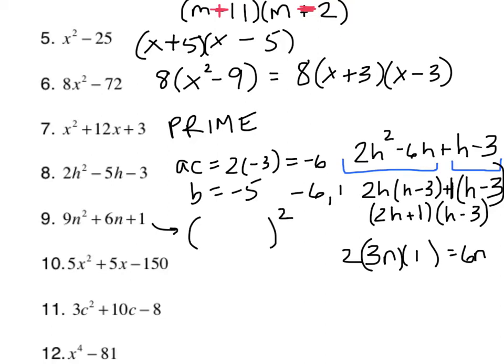So this is a perfect square. Square root of 9n squared is 3n. Square root of 1 is 1, and it's got to all be positive, because both of the terms, the second and the third term, the linear term and the constant, everything's positive there. Fantabulous. Three more.